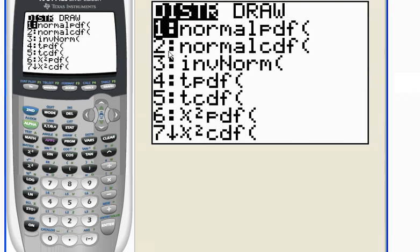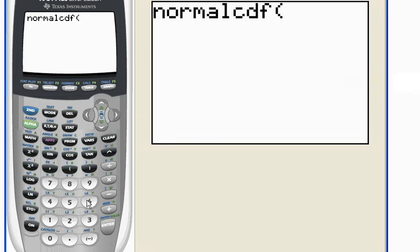to get to my distribution menu, which I am using a normal distribution. And I want to go from 1.75, which is my left-hand boundary of my shaded region, to 99. Any large number will do, but I'm going to use 99.